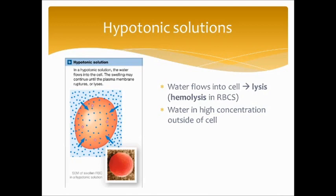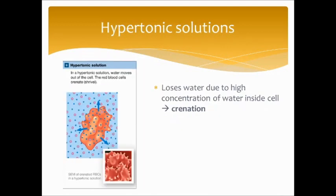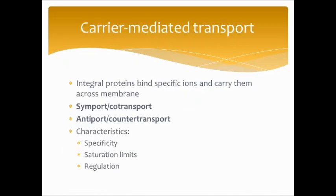In a hypotonic solution, water is in higher concentration outside the cell, meaning there is more solute on the inside. Water will flow toward the direction of more solutes — into the red blood cell — causing lysis, or in the case of red blood cells, hemolysis. 'Lysis' means to burst, 'hemo' means blood, so the red blood cell bursts due to too much water. The opposite is a hypertonic solution, where there are a lot of solutes outside the cell and high water concentration inside; the water rushes outside, causing crenation, or shriveling up.